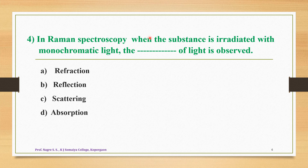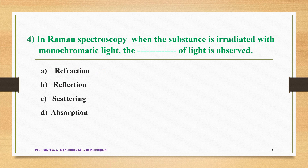Question 4: In Raman spectroscopy, when the substance is irradiated with monochromatic light, which interaction is observed? Options: A — reflection, B — reflection, C — scattering, D — absorption. In Raman spectroscopy, unlike most spectroscopy where absorption takes place, a new phenomenon occurs. The correct answer is option C — scattering is observed when the substance is irradiated with monochromatic light.